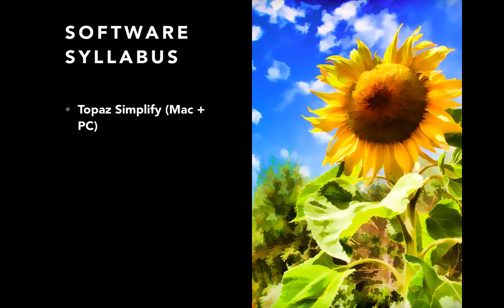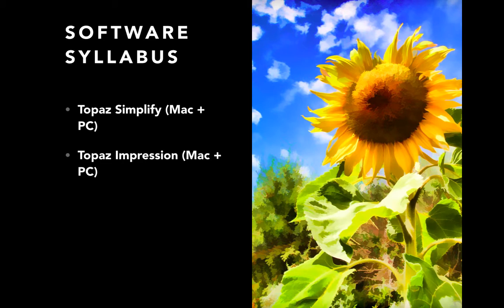Topaz Simplify is a Photoshop filter that runs on both Mac and PC. As its name implies, it tries to simplify details the way an artist would reduce an image to its most important parts. Topaz Impression also runs as a Photoshop filter on both Mac and PC, and it attempts to mimic specific styles of impressionistic painters such as Monet, Cezanne, and Seurat, as well as general painting styles like impasto or charcoal.